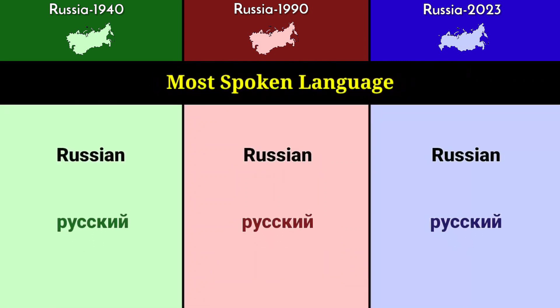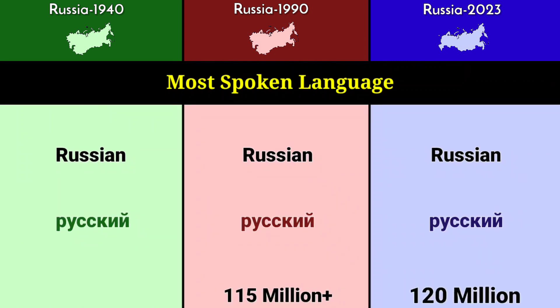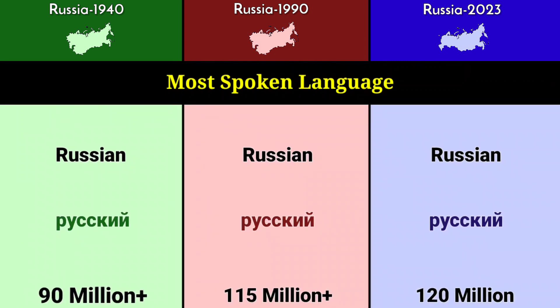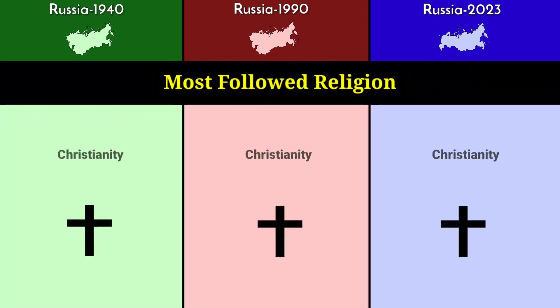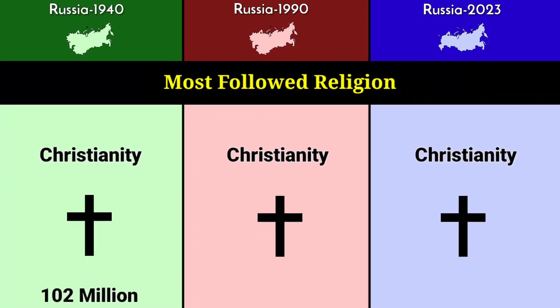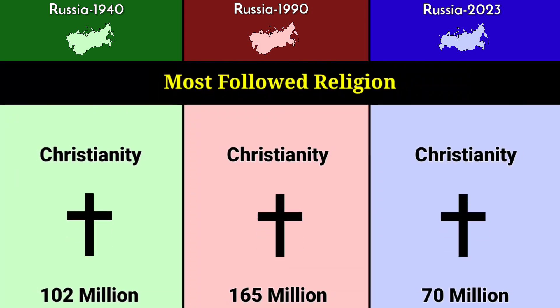Most spoken language: Russian language for all three periods — 115 million speakers in 1940, 120 million in 1990, and 90 million in 2023. Most followed religion: Christianity — 102 million in 1940, 165 million in 1990, and 70 million in 2023.